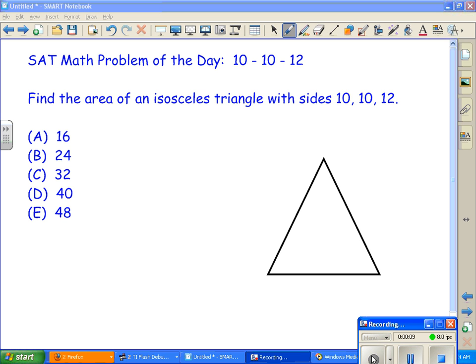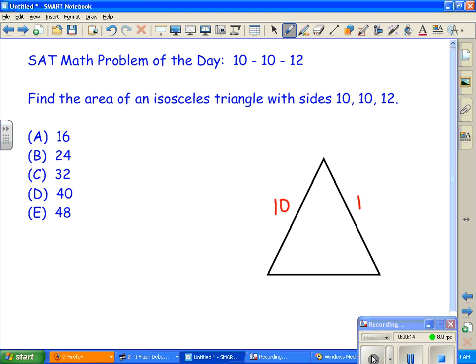Finally, you have an isosceles triangle with sides of 10, 10, and 12. So if you have an isosceles triangle, you have two sides that are the same, 10 and 10, and the base is 12.